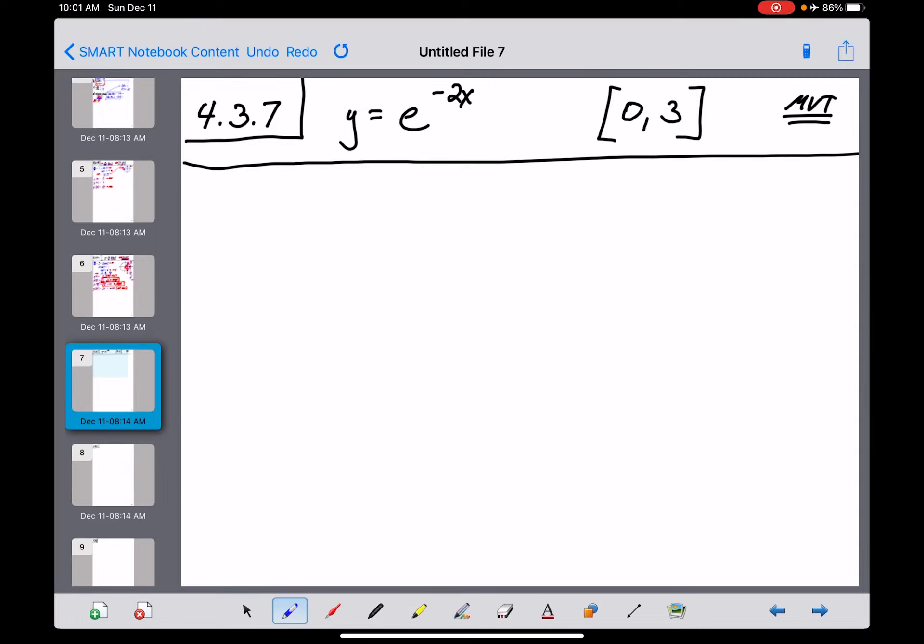4.3 number 7 has given you a function here, y equals e to the negative 2x. They've given you an interval here from 0 to 3, and they want you to find a value c for which this function is going to satisfy the mean value theorem.